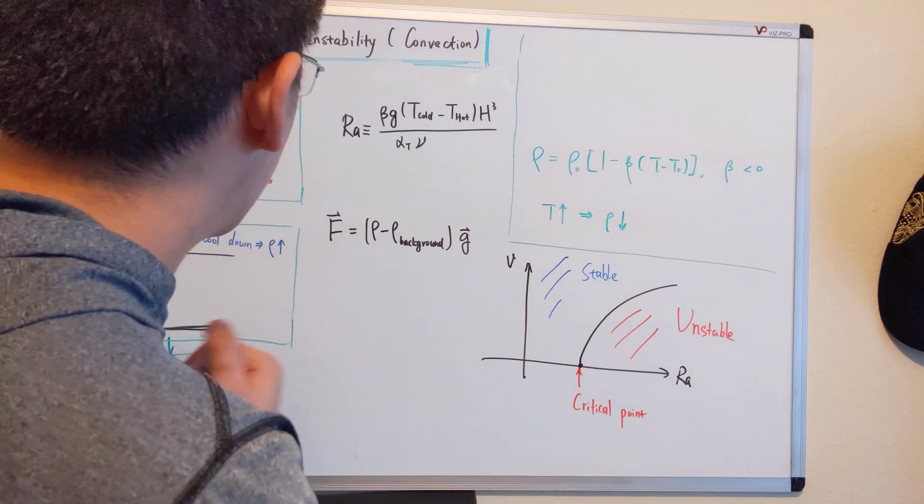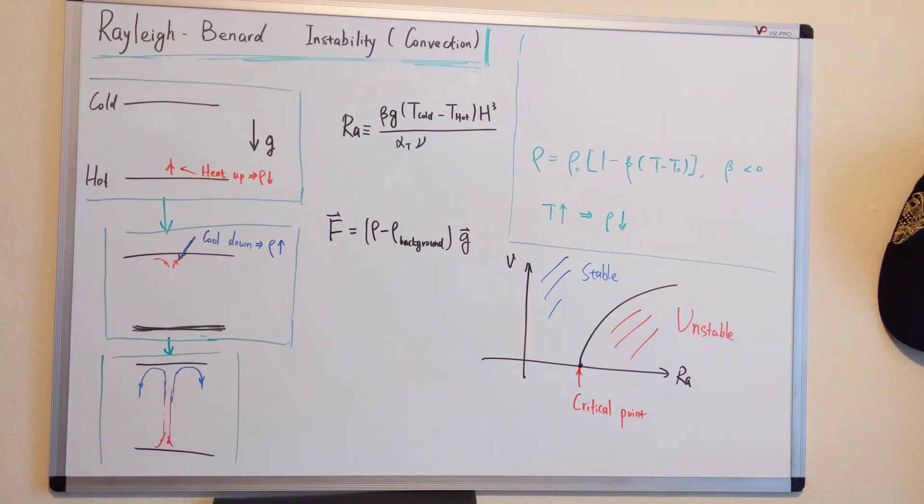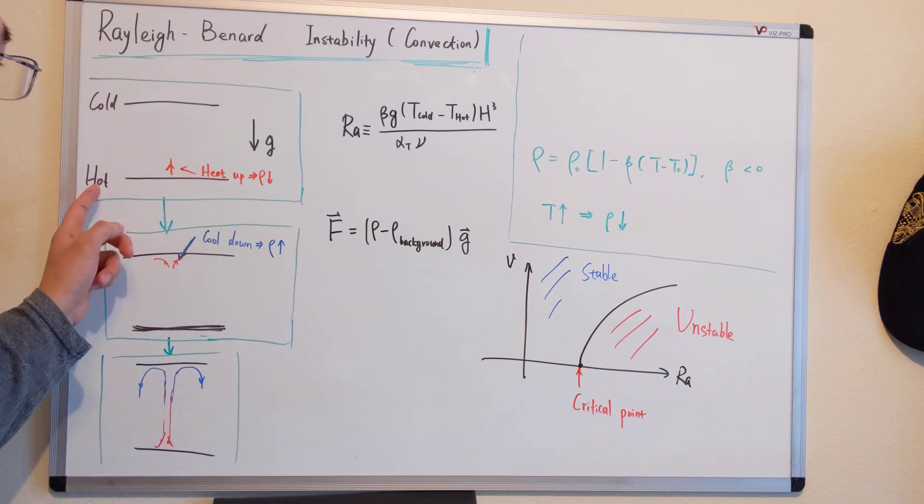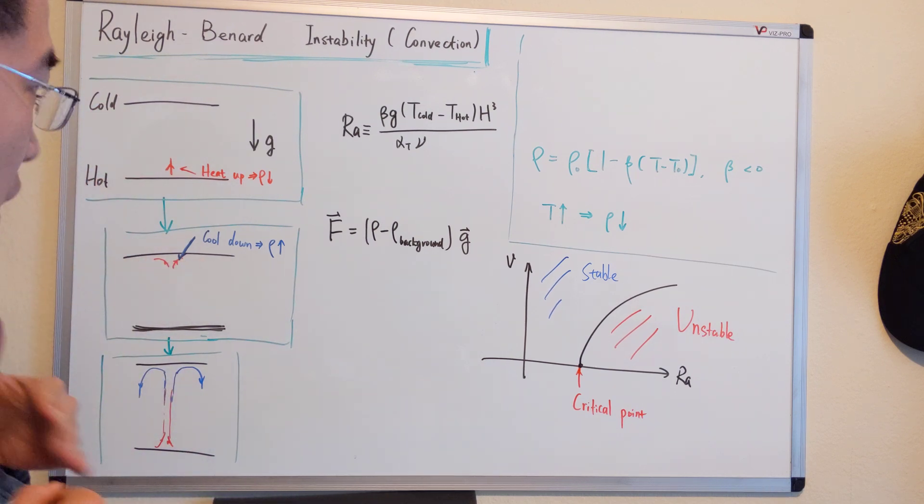Okay, let me give you a quick physical understanding of Rayleigh-Bernard instability. So the basic setup is: at the bottom it's hot, at the top it's cold, and we have gravity going down.